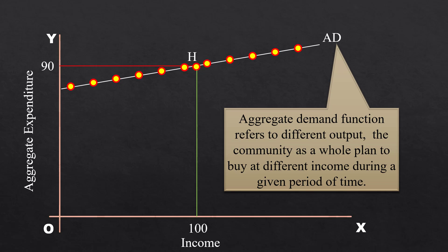Aggregate Demand function refers to different output the community as a whole plan to buy at different income during a given period of time. With this understanding, we shall proceed to discuss the various components of Aggregate Demand.